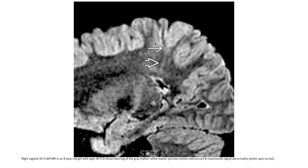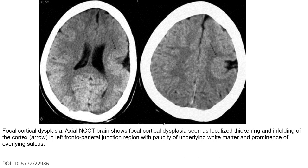This case shows transmantle signal abnormality. This is a case of focal cortical dysplasia on non-contrast brain MRI, where focal cortical dysplasia presents as localized thickening and infolding of the cortex at the interlateral junction region, with paucity of underlying white matter and prominence of overlying sulci.